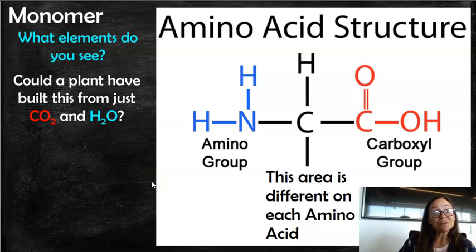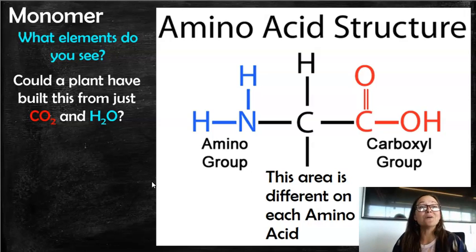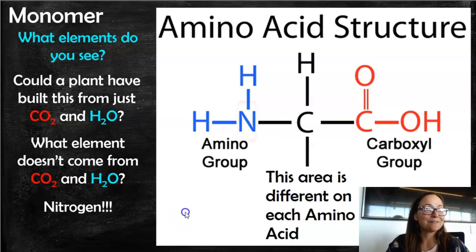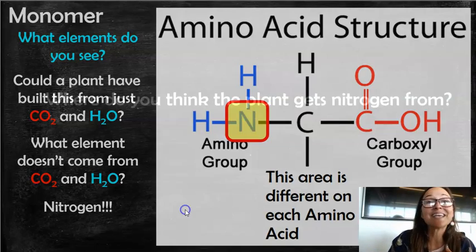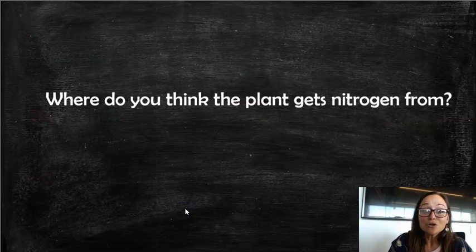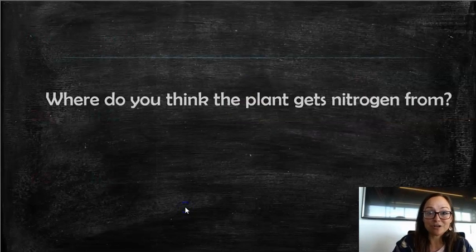So if a plant was building its own amino acids, could it build its own amino acids from just carbon dioxide and water? No. What else does it need? It needs nitrogen. So what element doesn't come from carbon dioxide and water? Nitrogen. The plant has to get it from somewhere else. So where can this plant get nitrogen from?